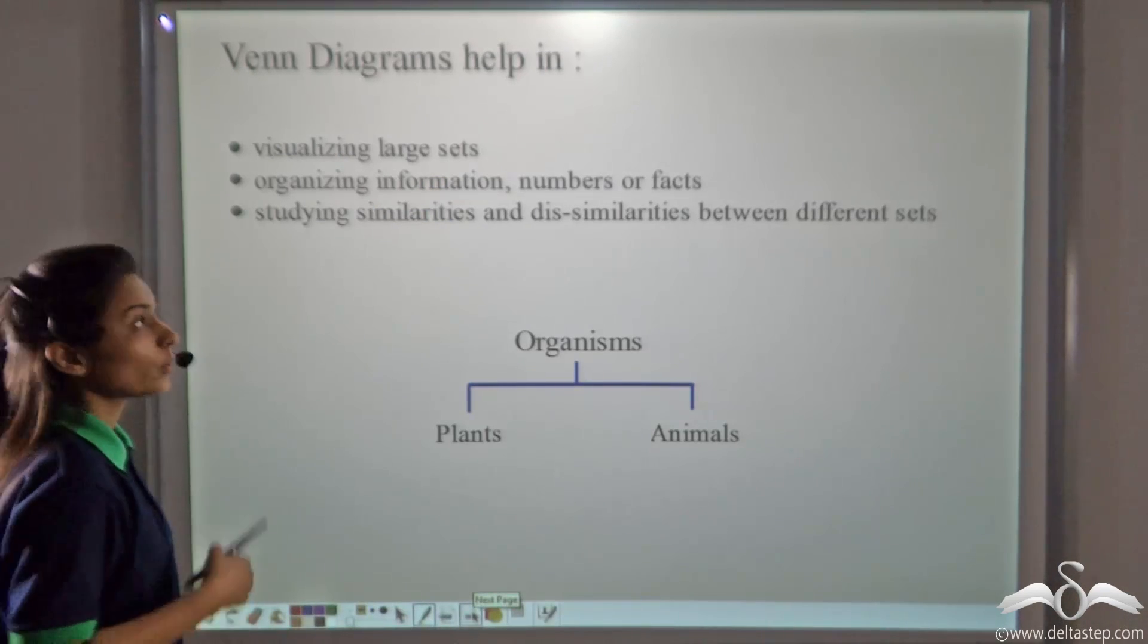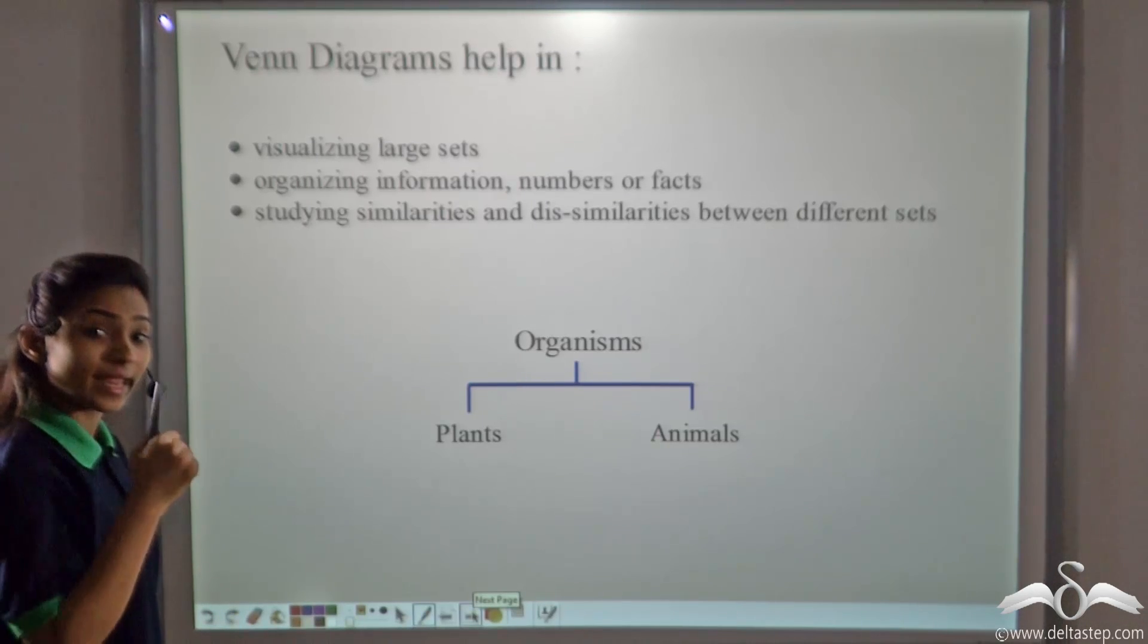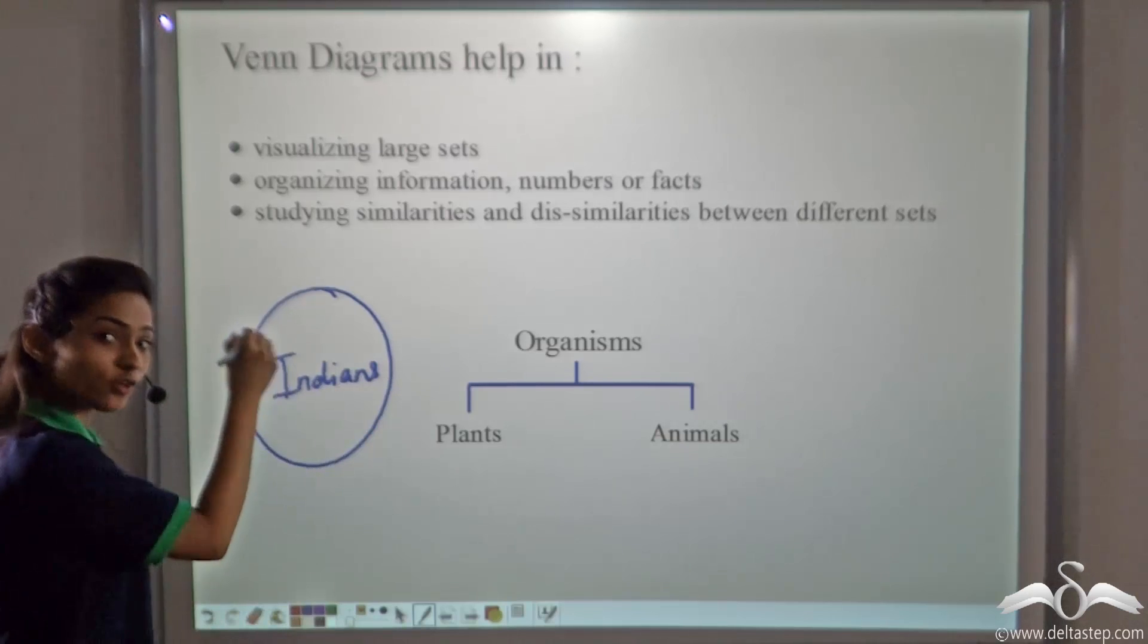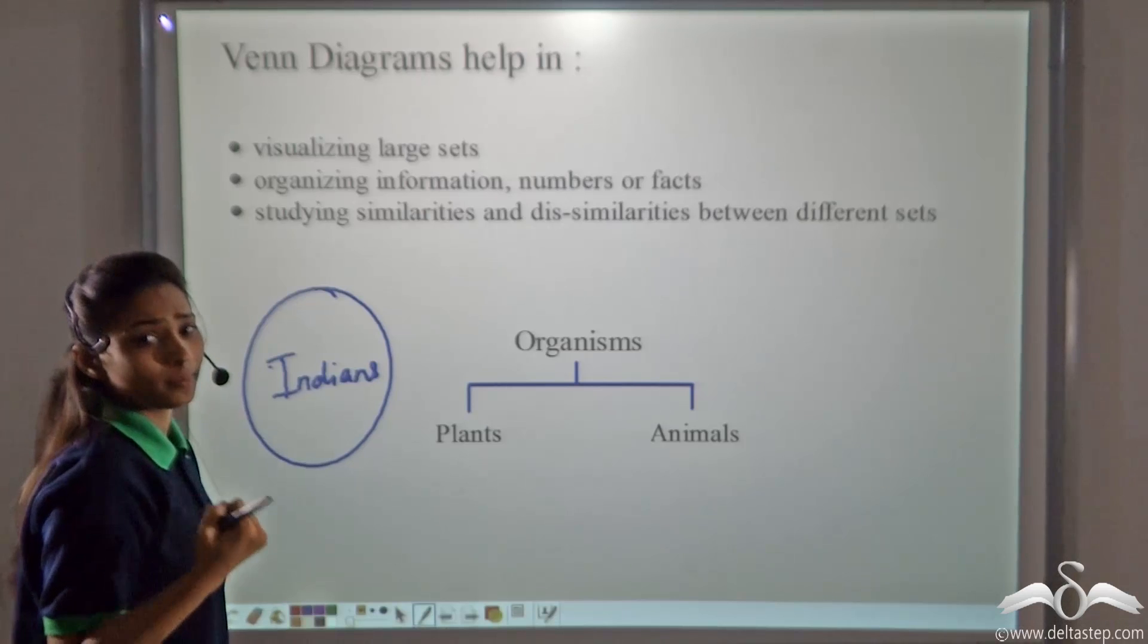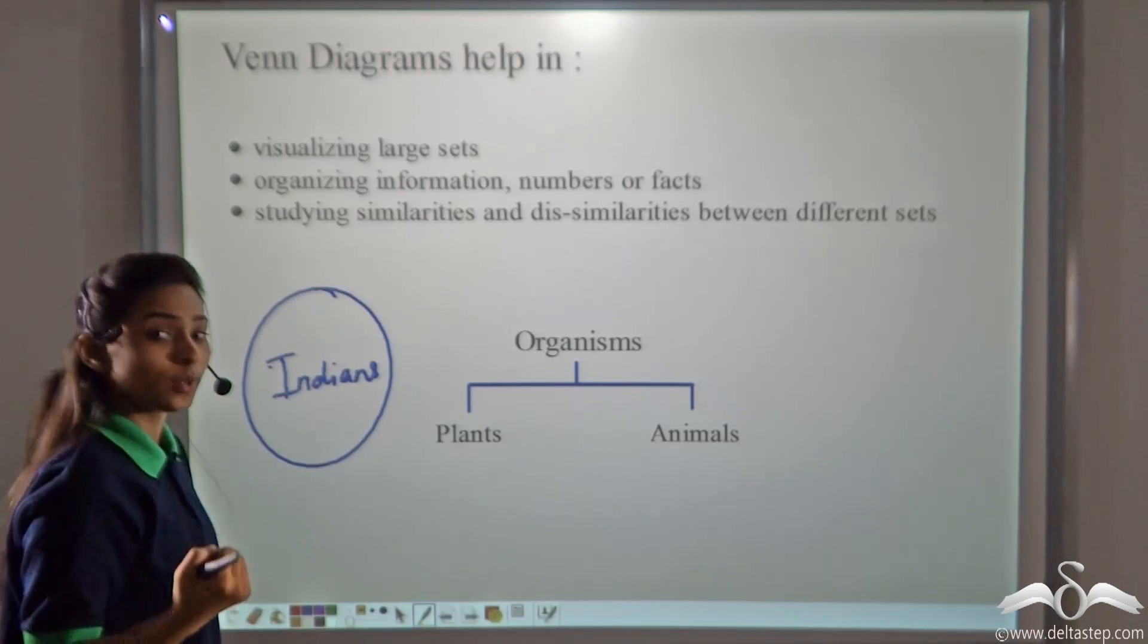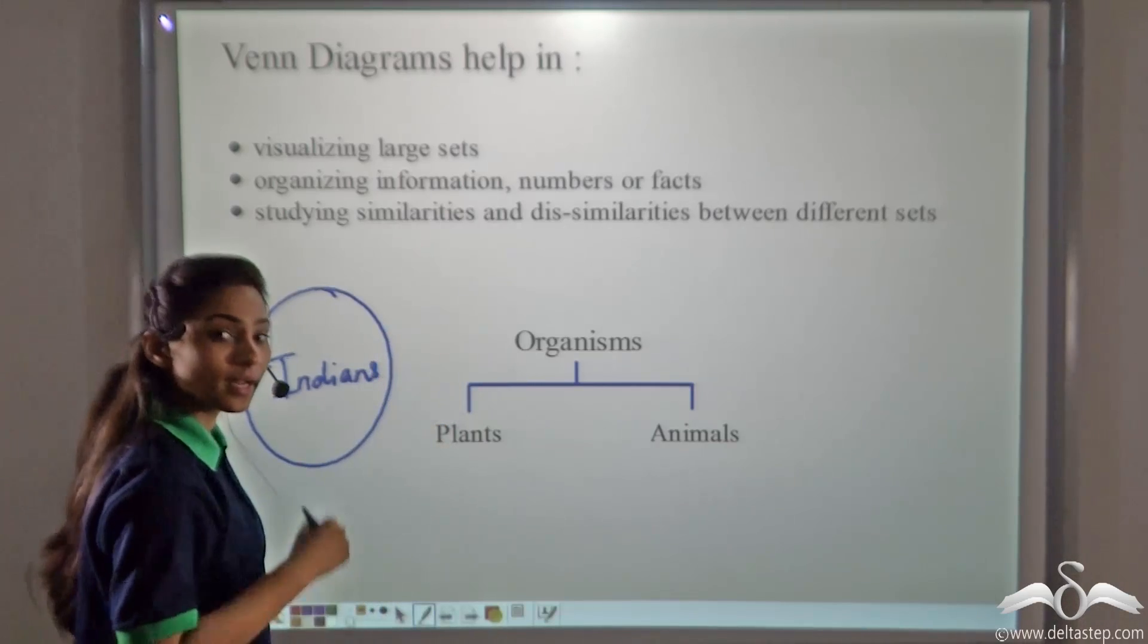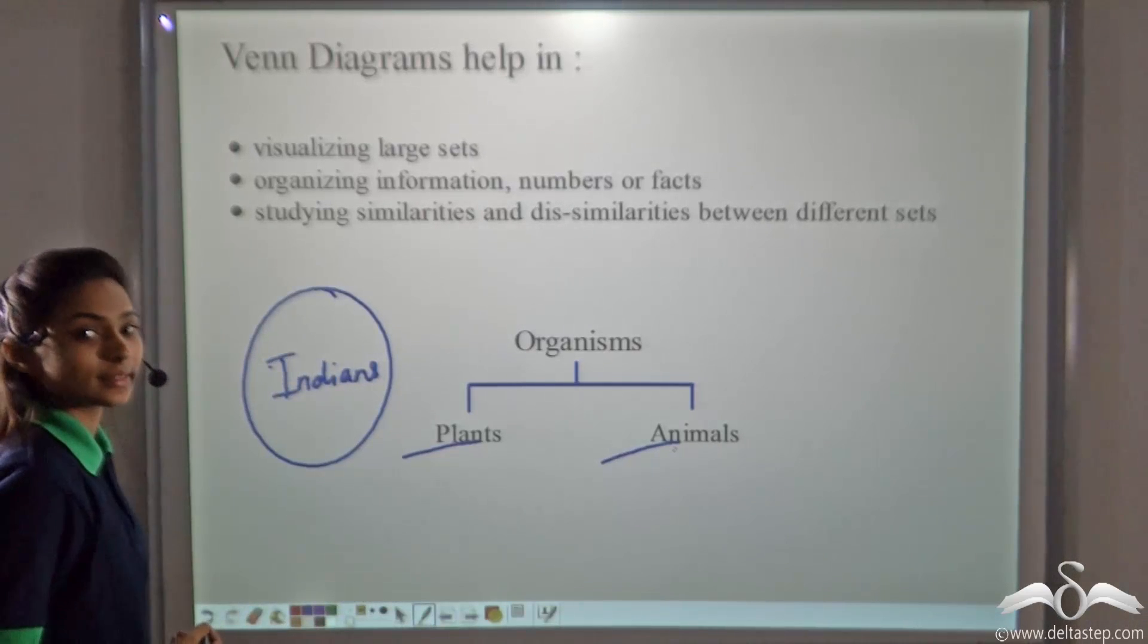How will Venn diagrams help you? Venn diagrams will help you in visualizing large sets such as the set A of all Indians. You could just make a circle and write Indians inside it. So you could visualize the set of all Indians. It will help you in organizing information, numbers, or facts. You may not be able to apply Venn diagrams now, but after the next few lectures, you will be able to apply Venn diagrams in all your problems. You will also be able to study similarities and dissimilarities between different sets such as the set of plants or the set of animals and many more examples like this.